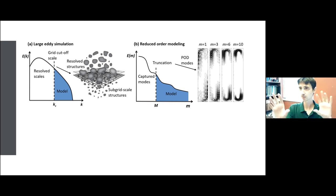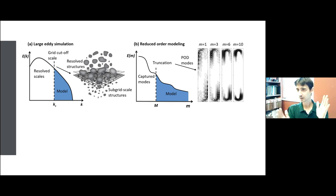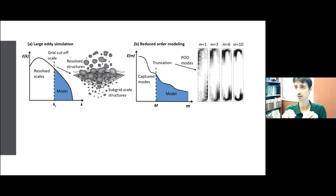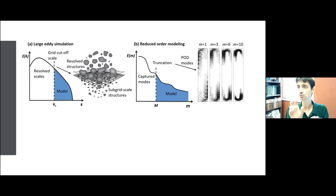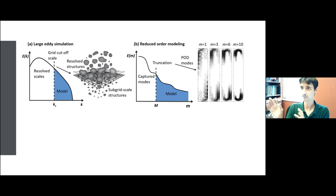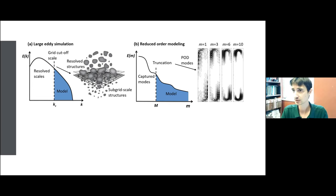In our group we work on both approaches and the analogy between them, because of the underlying non-linearity. The truncated part — the truncated modes in these figures — I call the model over there: their effects on the large scale, which is the closure problem. What is the best model, or the most representative model, to account for all these truncated scales in the resolved parts? That's the underlying problem we have been working on over the past few years.